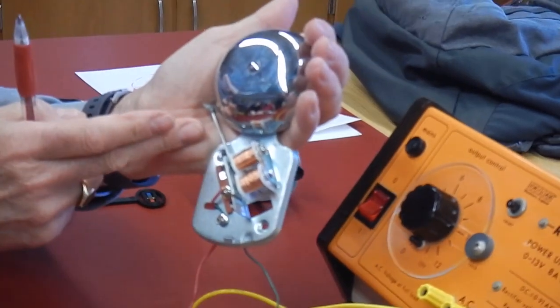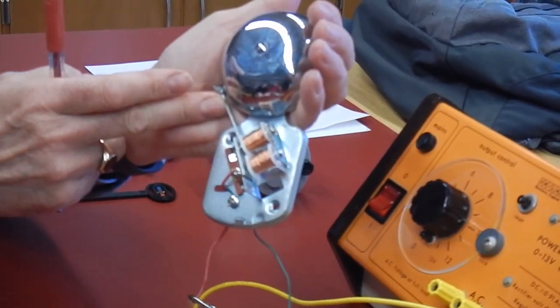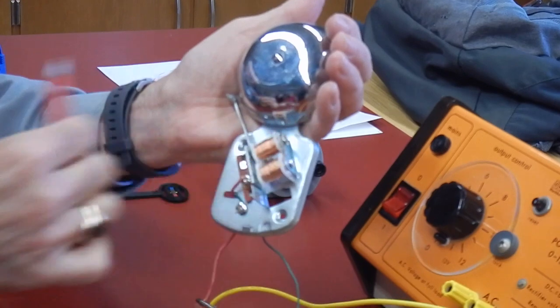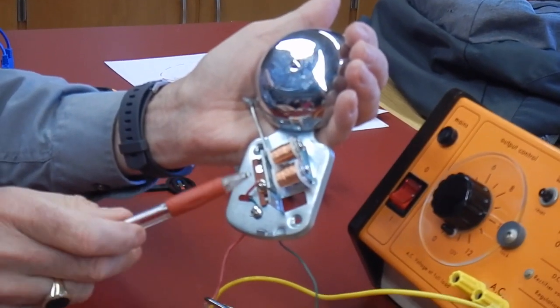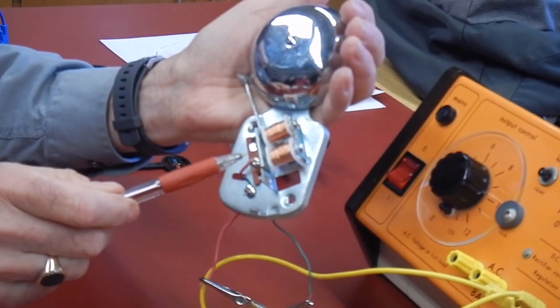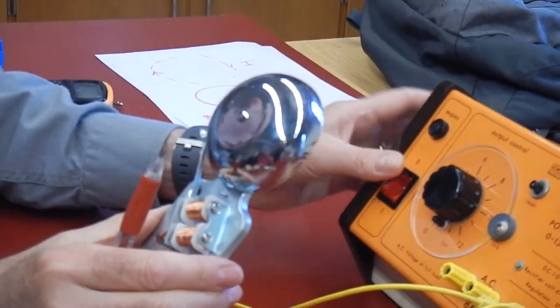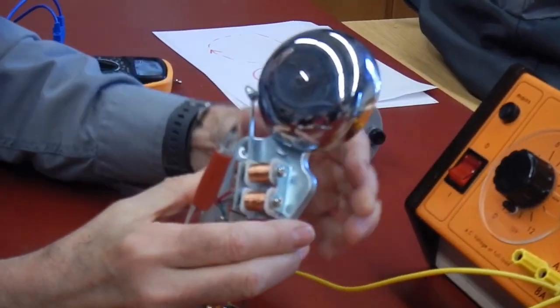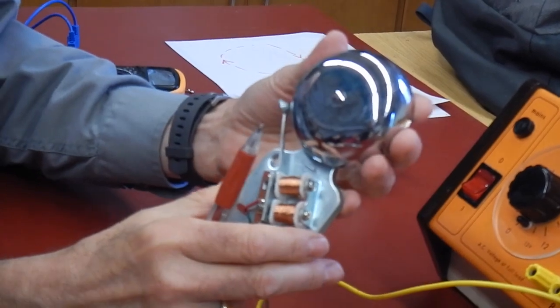And at the same time, that contact there is broken where the electricity to the coils must flow through. So as it goes that way, the current's turned off, and it's springy so it returns on its own. If you get the springiness right, you get the frequency right, and it turns on and off quite dramatically.